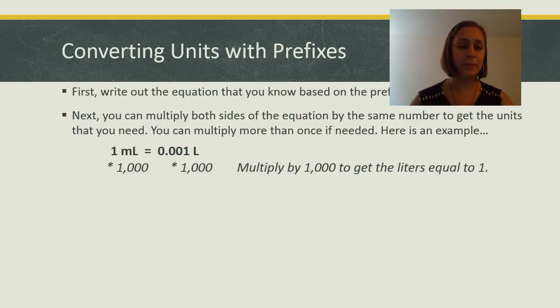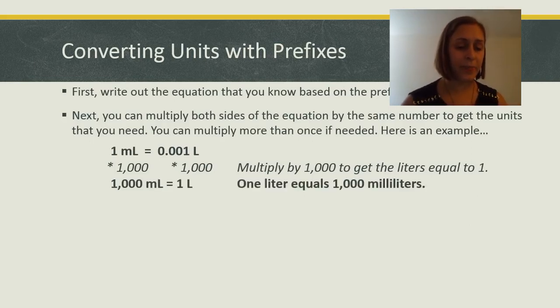Here's an example. We want to know how many milliliters is in one liter. So, we're going to multiply both sides by one thousand. On the left, one times one thousand equals one thousand milliliters. On the right, one thousandth times one thousand equals one liter. So, we see that one liter equals one thousand milliliters.